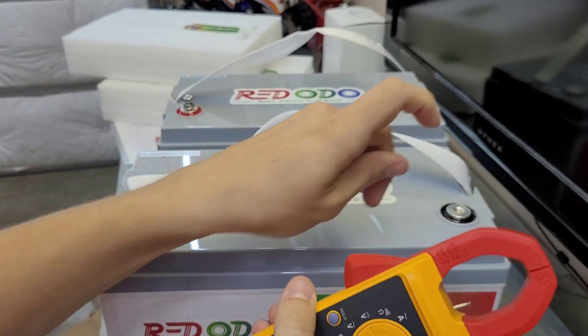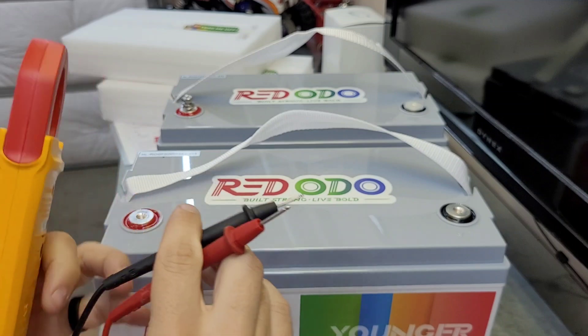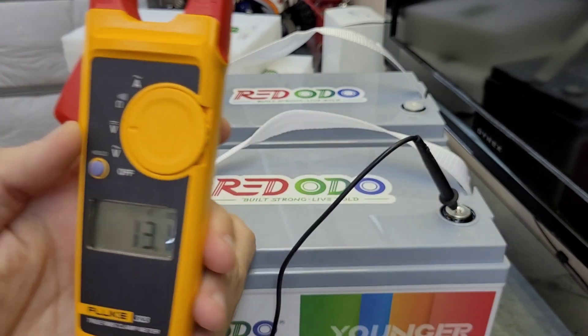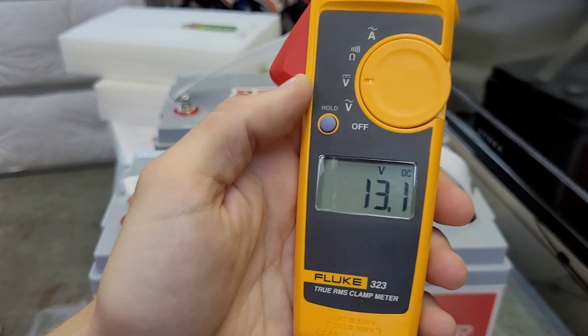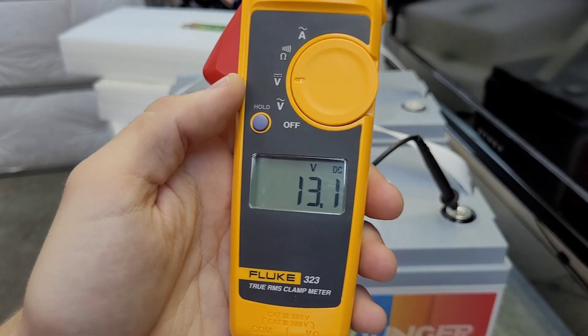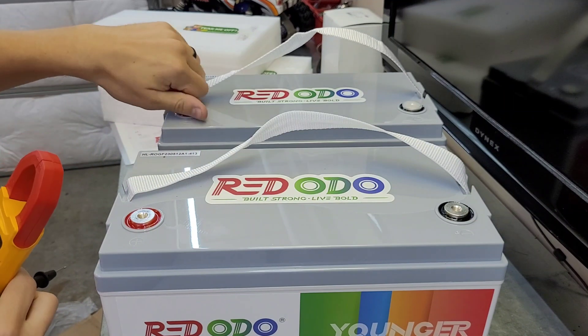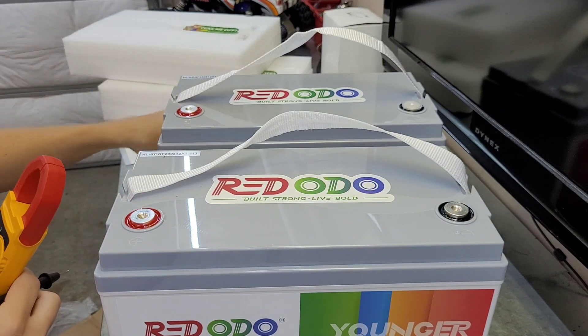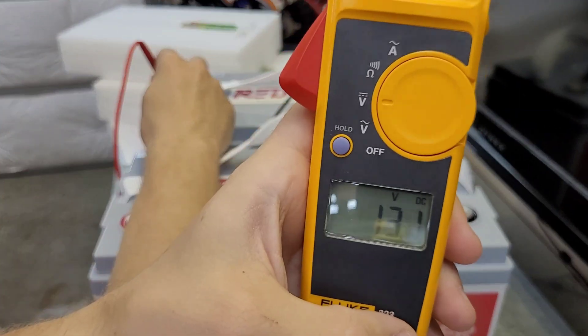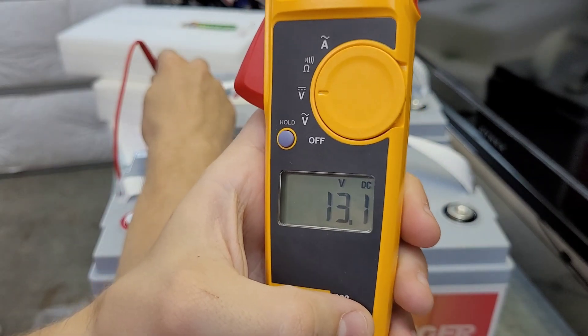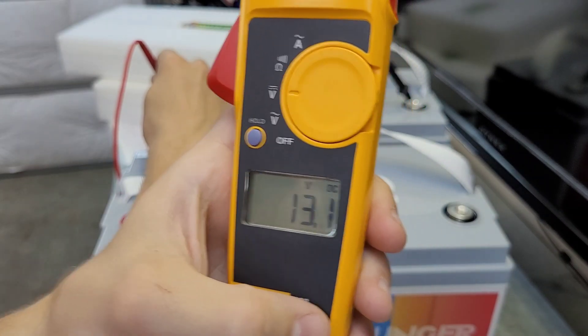So let me check the voltage here. These usually ship around 50% charge, so we'll see what these guys are sitting at. This one is sitting at 13.1 volts DC, so I think that's around 40-50% charge. We'll have to check the manual after this. And this one is sitting at 13.1 as well, so nice and consistent.